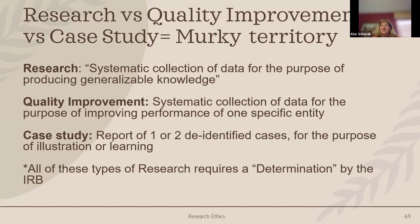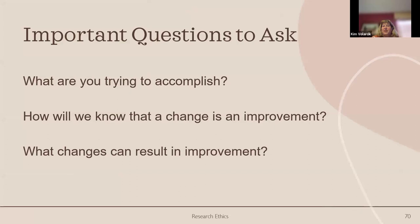Quality improvement or program evaluation falls under non-human subject research when the information stays within one agency. If you're evaluating a program and the data stays within that agency, it could be considered not human subject research. For case studies, if you have one or two de-identified cases, that does not rise to the level of generalizable knowledge. Case Western Reserve University requires an IRB determination — if you're unsure, contact the IRB office and they'll work with you to determine where your project falls.